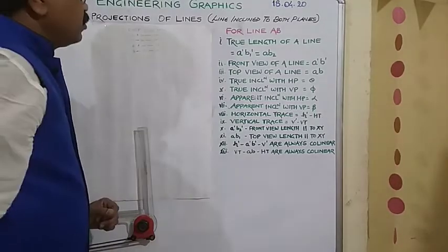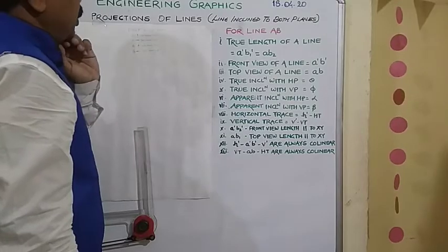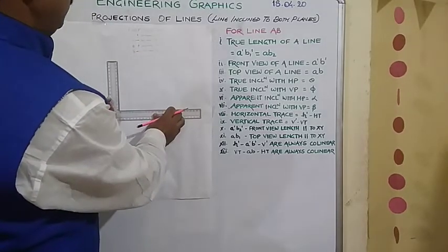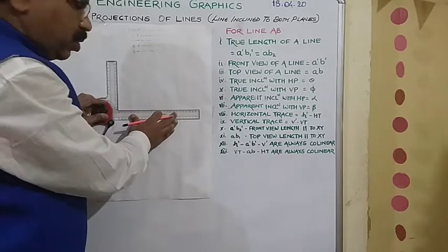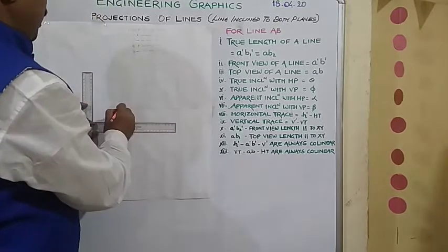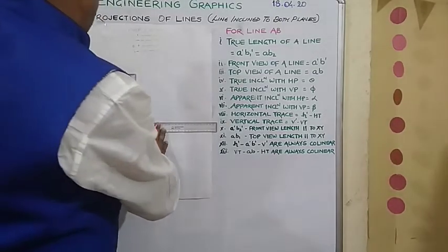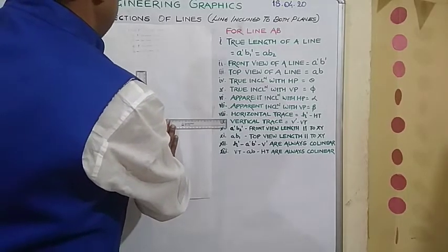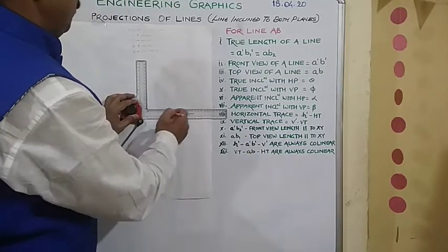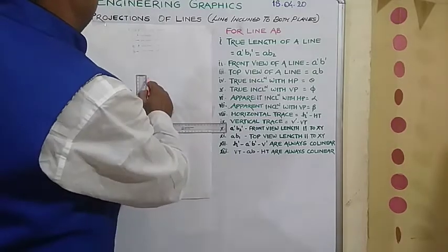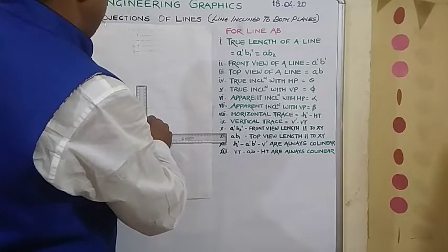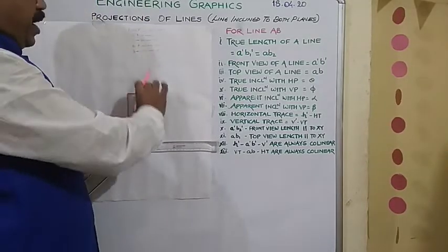Now as mentioned in the statement, particularly the distance between the end projectors is given 60 millimeter. So what we are going to do at the start of the solution, we will use drafter. Now we will draw a horizontal line, XY line. We will draw one horizontal line, XY line. Then on this XY line as the distance between the end projectors is given 60, so we will mark two points 60 millimeter apart. So for your clarification I am taking more distance. And we will draw two faint lines. Why these two lines are required because these are the projectors on these particular lines will have A dash A, B dash B.